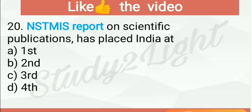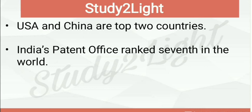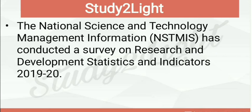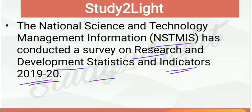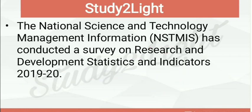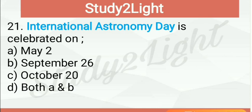Next question: the NSTMIS report on scientific publications has placed India at — India has been placed 3rd, so C is the right answer, while the US and China are ranked the top two countries. India's patent office is ranked 7th in this index. The National Science and Technology Management Information System, in short NSTMIS, conducted a survey on research and development statistics and indicators from 2019 to 2020.